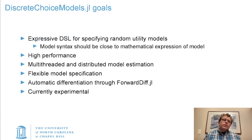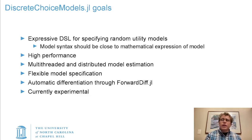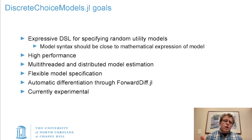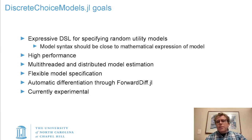The goals of this package are to create an expressive domain-specific language for specifying random utility models, and I want that model syntax to be very close to the way you would express that model mathematically, like a lot of different Julia statistical packages. I'm looking for high performance through multi-threading and distributed model estimation, as well as through well-written code. I want very flexible model specifications, and I want to use ForwardDiff.jl to provide automatic differentiation and analytic standard errors.